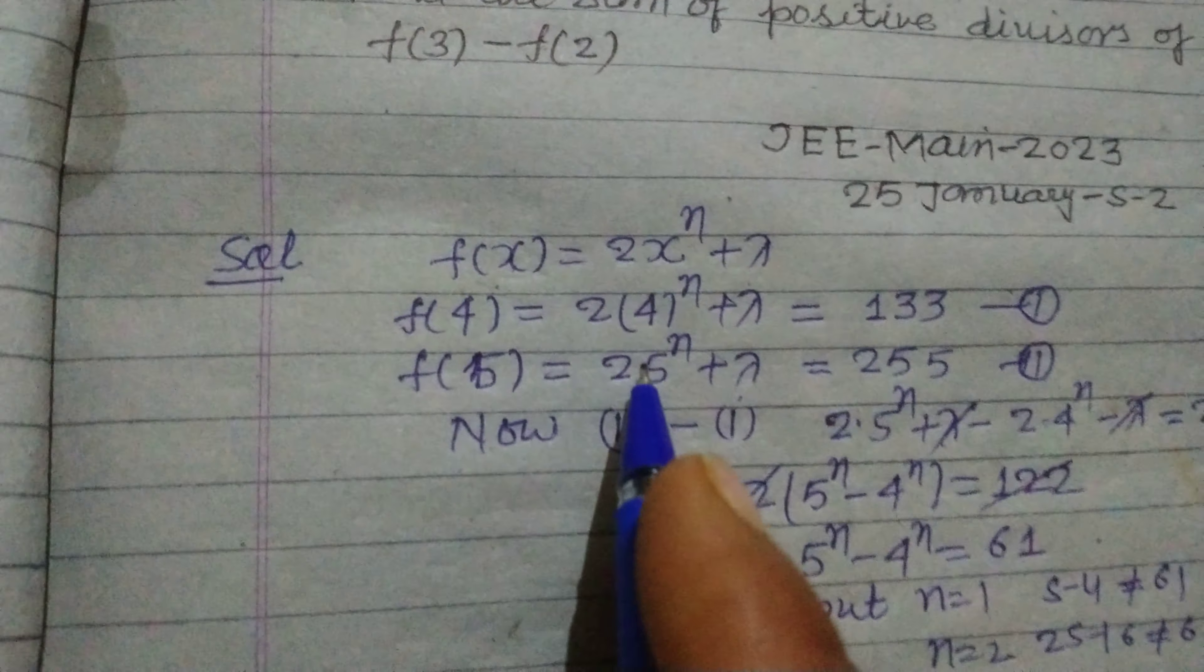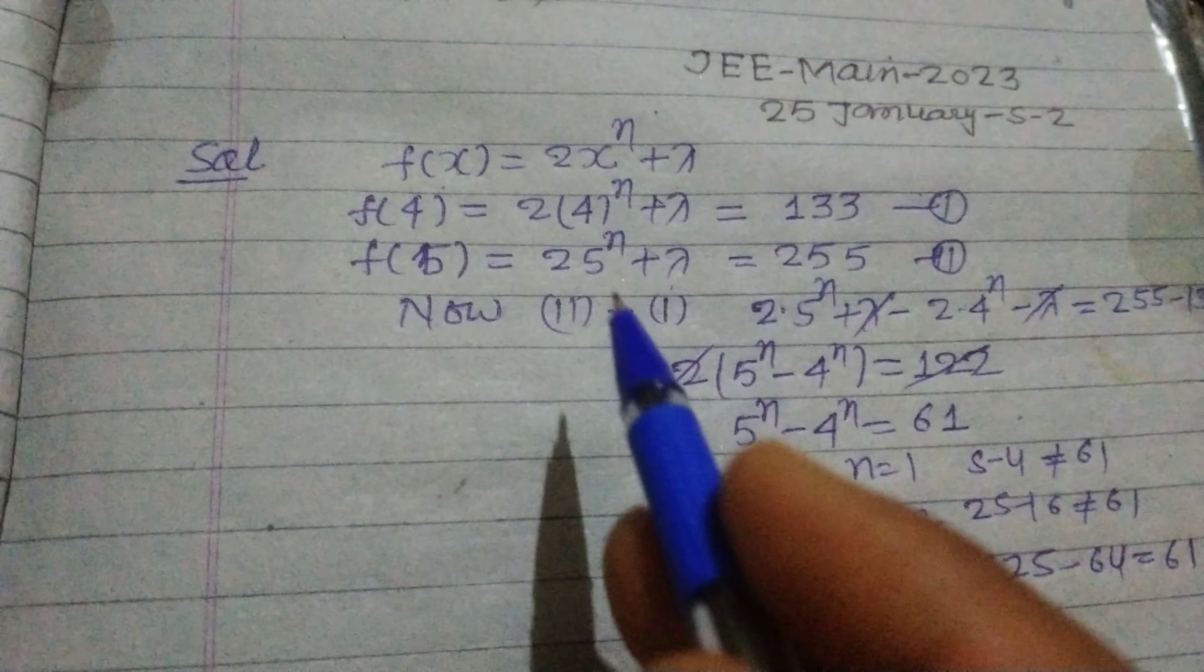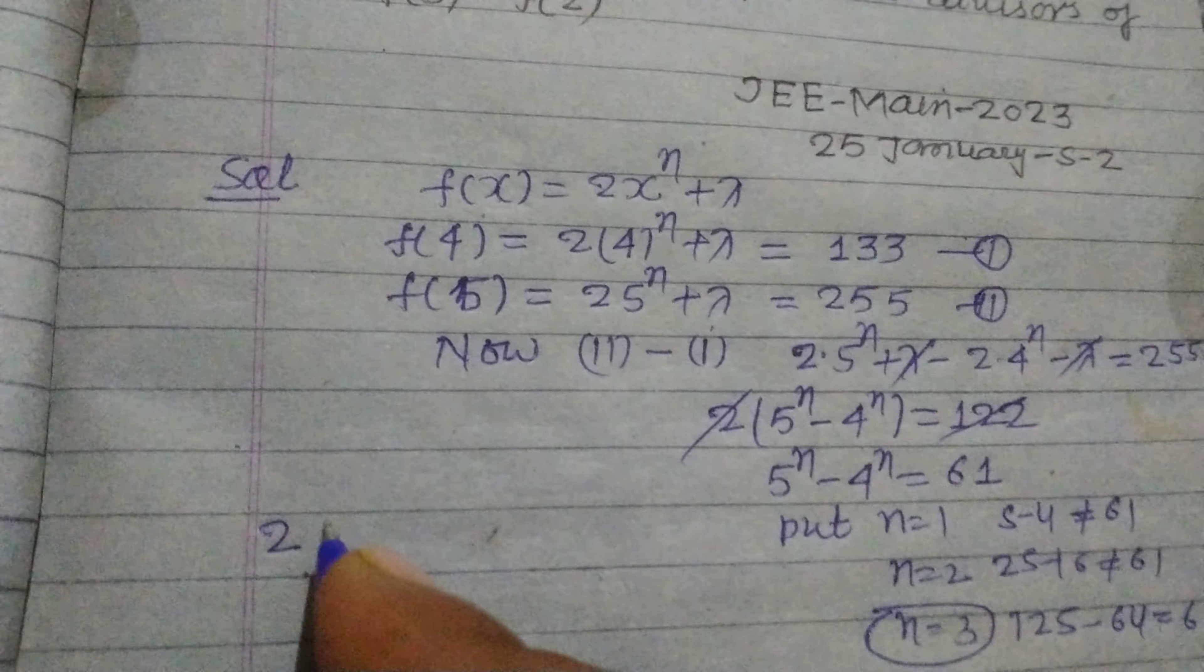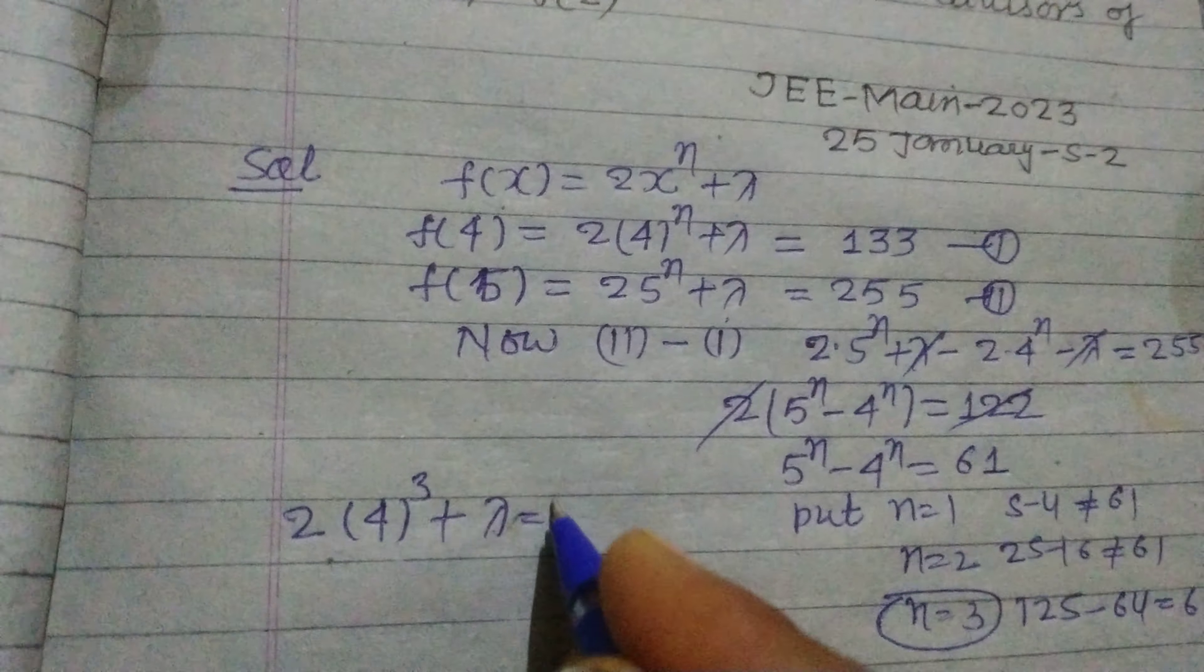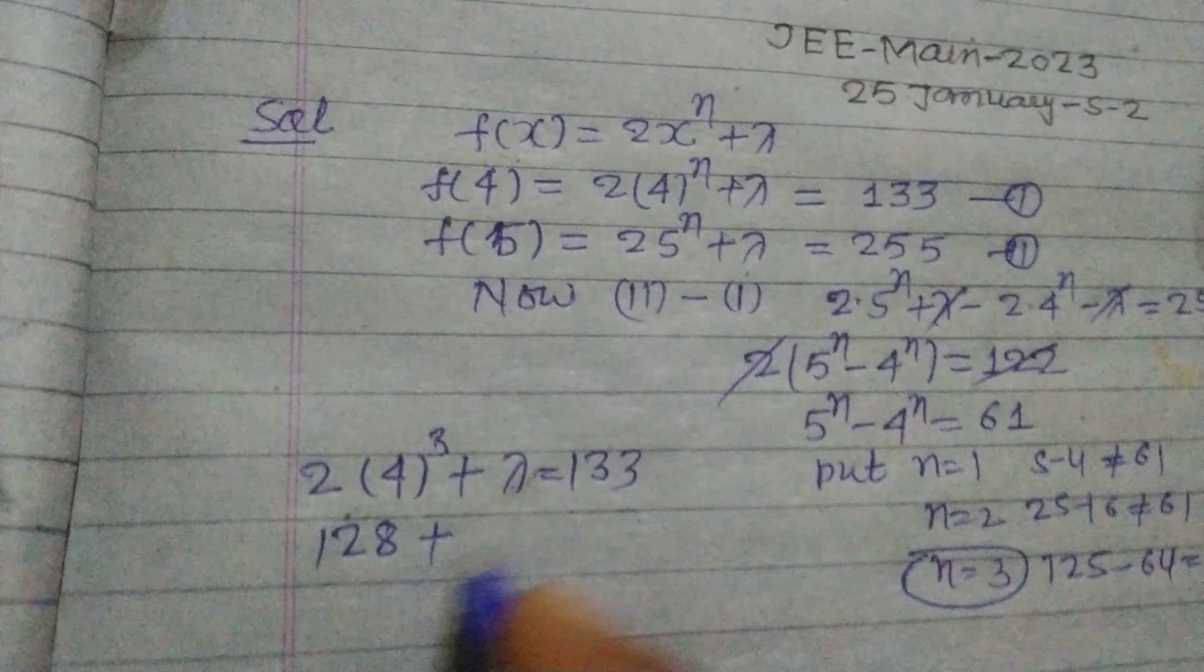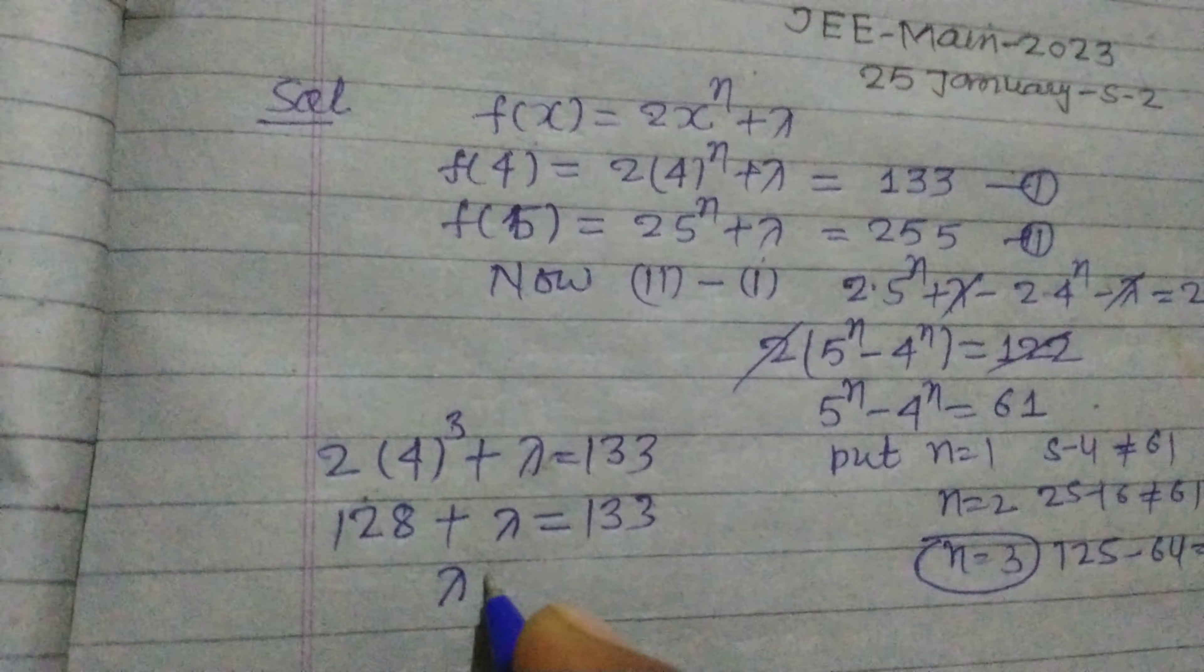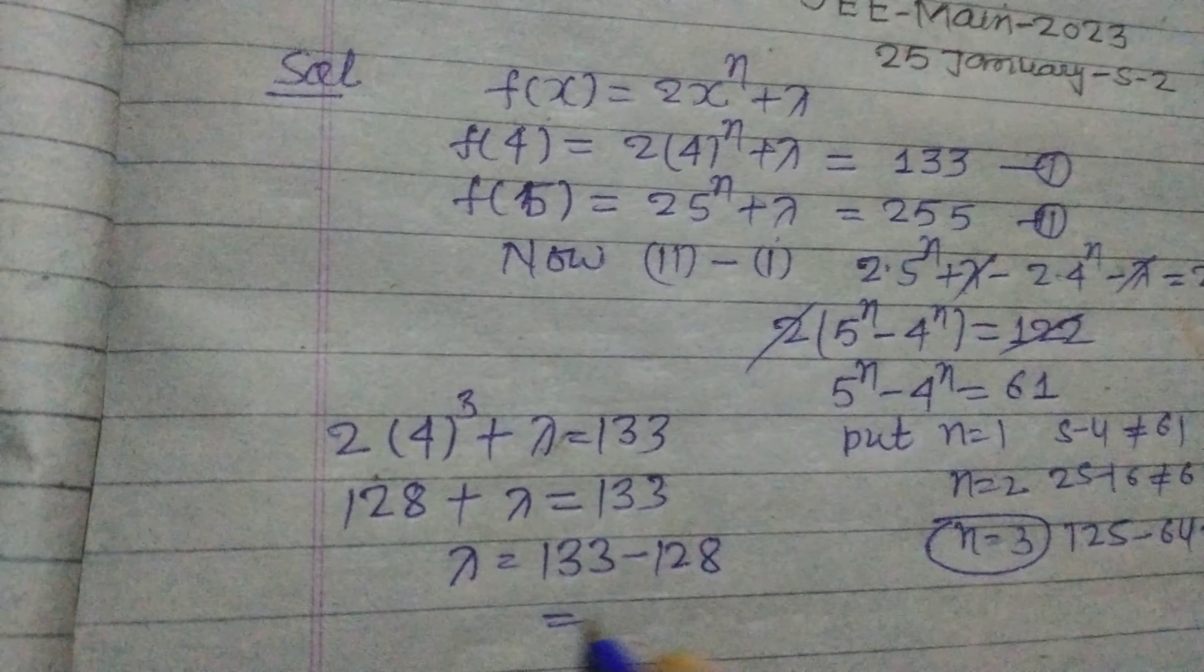When we put here in the first equation, 2 × 4^3 + λ = 133. So this is 64, 64 × 2 is 128, plus λ = 133. Therefore, λ = 133 - 128.